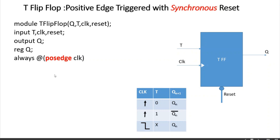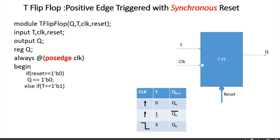We are using posedge clock because we are designing a positive edge triggered flip-flop. Within the always block: when the reset signal is 0 we want the output set to 0. Else if T is 1 we want the output to toggle, which we realize using the tilde (~) operator. Otherwise we don't want any change and we use the assignment Q <= Q. This is the design module for the T flip-flop.